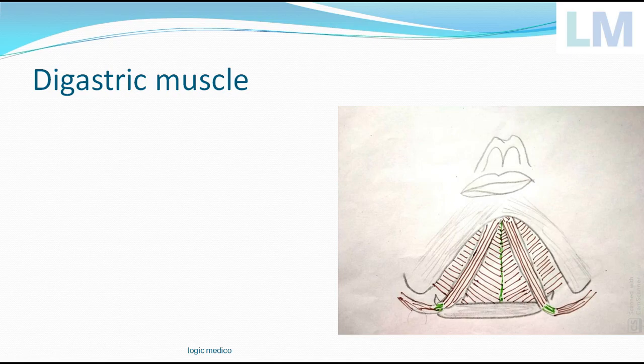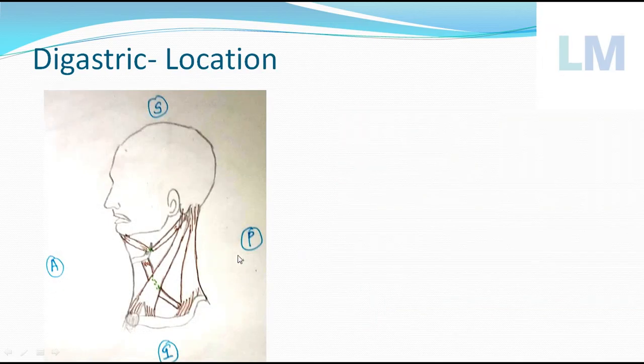Digastric muscle. Why is it called digastric? There are two bellies connected by an intermediate tendon. You can see this more clearly in this diagram.